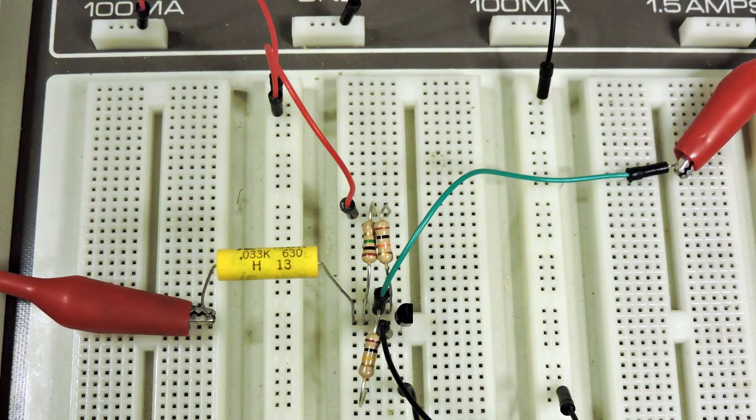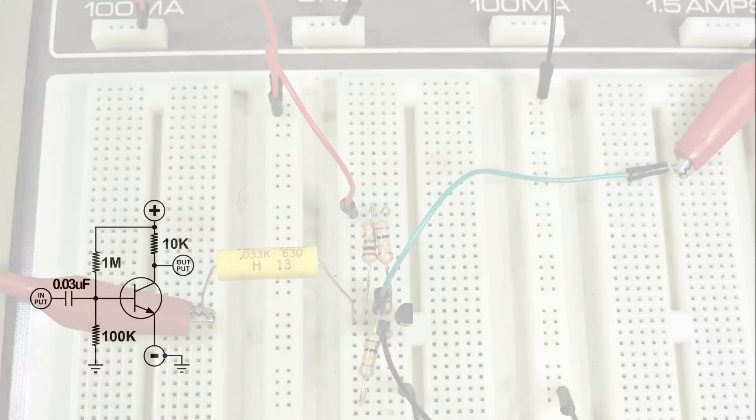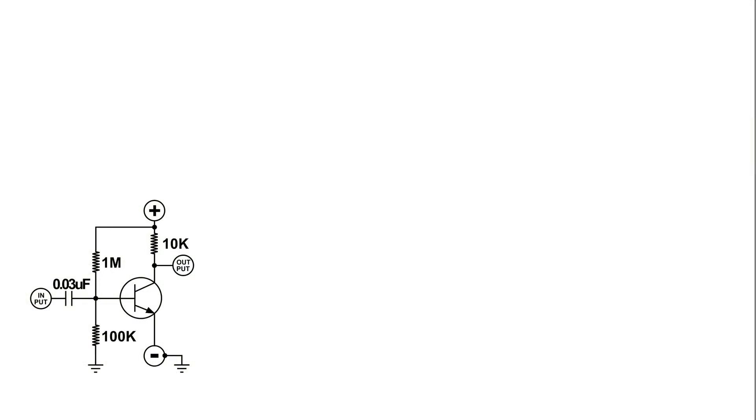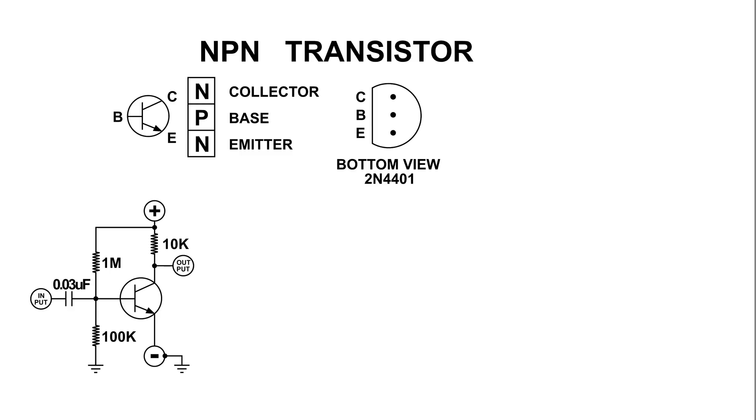Now this is a simple common emitter amplifier. This is what it is on the breadboard and here is the circuit. Now the transistor that I used in the design of this is an NPN transistor, a 2N4401.